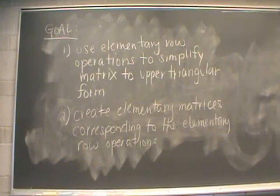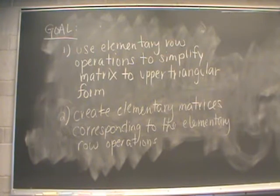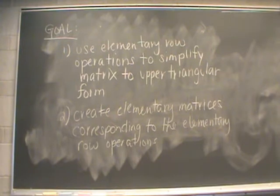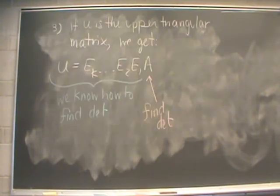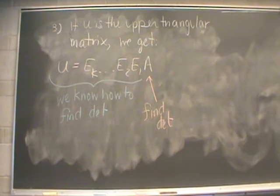The goal of this method comes in a couple parts. First, we're going to use elementary row operations to simplify our given matrix to an upper triangular matrix. Secondly, we're going to create elementary matrices that correspond to each of the elementary row operations we did in step 1. Our last step is to set up a matrix equation and we're going to use that matrix equation to help us find the determinant of our original matrix A.